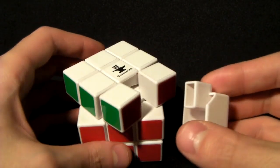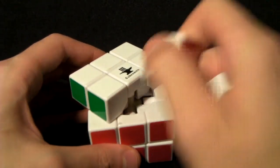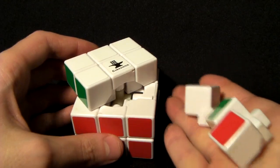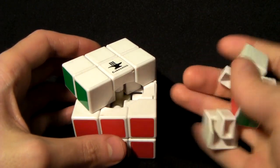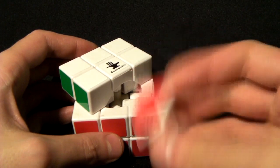These little cubies that are in here—the little pieces—are referred to as cubies. We have 12 edge pieces like this.